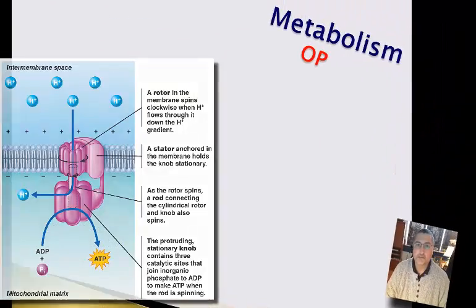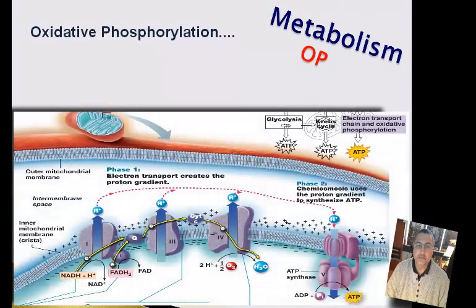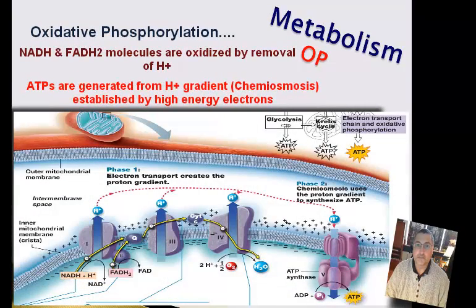This is what we know as oxidative phosphorylation. The NADH is oxidized — we remove the hydrogen — and the energy from those electrons is used to create ATP molecules, instead of breaking covalent bonds as we would see in substrate level phosphorylation.